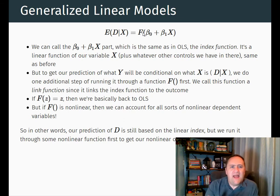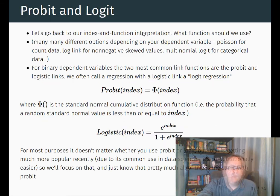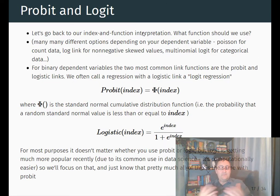So what kinds of link functions should we use? Well, there's a lot of link functions out there, and it depends on the kind of dependent variable that you have. If you have a variable that just can't be negative, that's going to give you one kind of link function. If you have a variable that has to be counting numbers, that might be a log link or Poisson regression, which uses a log link. If you have a dependent variable that takes multiple categorical values, you might use a multinomial link function. But the most common ones, especially when we're talking about binary dependent variables, are probit and logit.